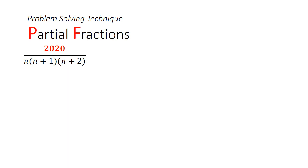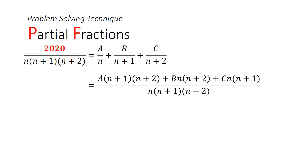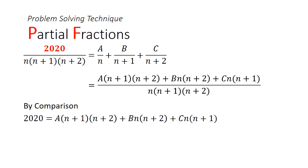Since the general term has three distinct factors, we express it as a/n + b/(n+1) + c/(n+2). Combining the right-hand side as a single fraction and comparing numerators gives: 2020 = a(n+1)(n+2) + bn(n+2) + cn(n+1).